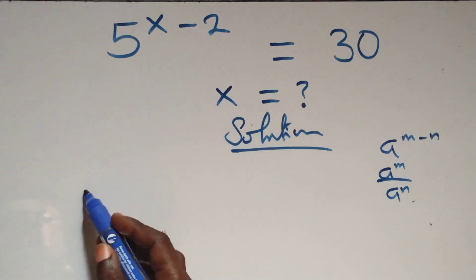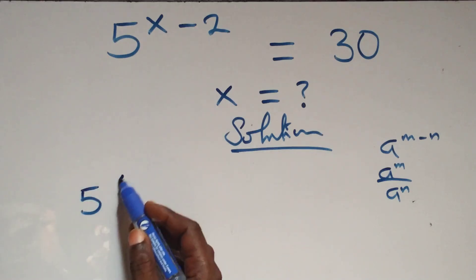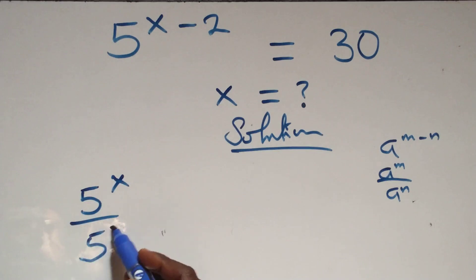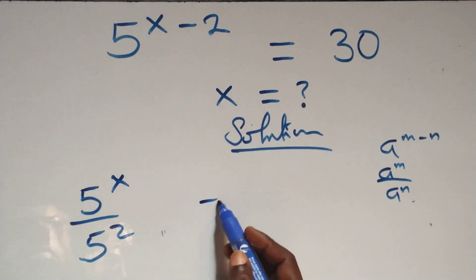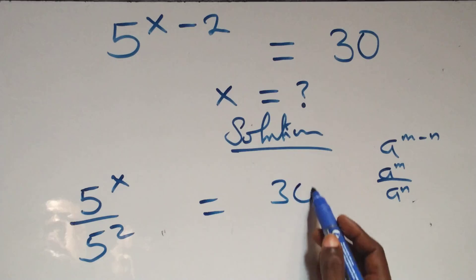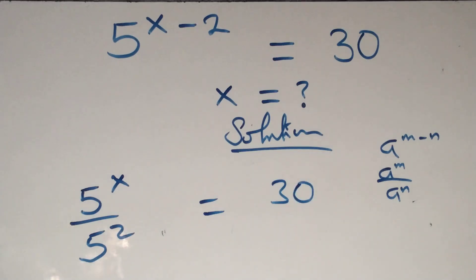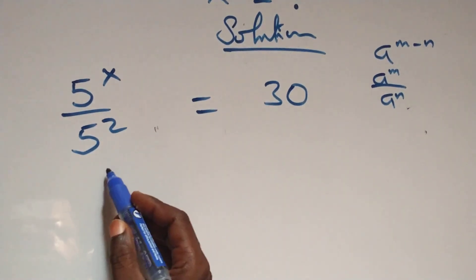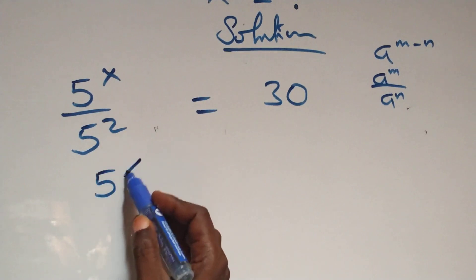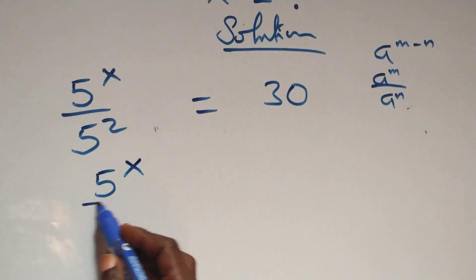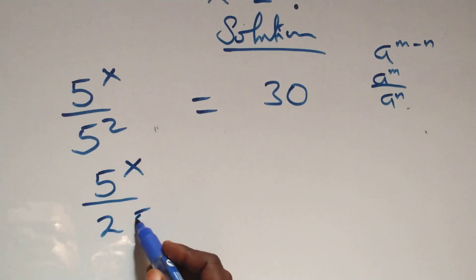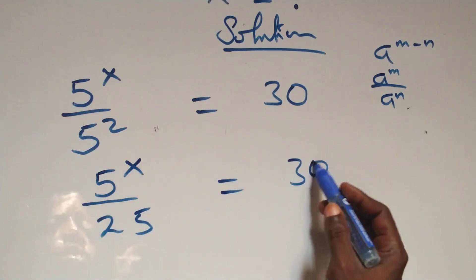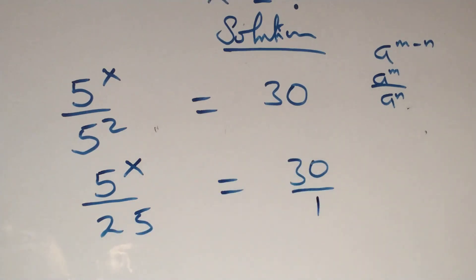What we have here becomes 5 raised to power x over 5 squared equals to 30 on this side. I also write this as 5 raised to power x over 5 squared — 5 times 5, that's 25 — then equals to 30 over 1 here.